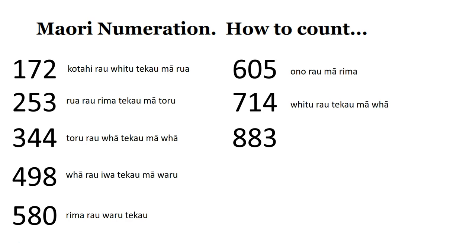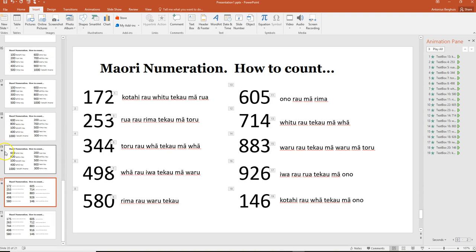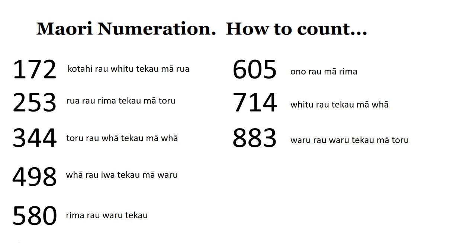883 — okay, a slight error there. We say waru rau, waru te kau mā toru. Eight hundreds, eight tens, and we add three. 926 — iwa rau, rua te kau mā ono. That means nine hundreds, two tens, and we add six.